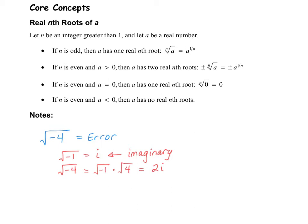However, if you have an odd number in the root — for example, the third root of negative 27 — negative 3 times negative 3 gives you positive 9, but positive 9 multiplied by another negative 3 does give us a negative number. So in this case, there is a solution, and that solution is negative 3. If you have an even index with a negative number on the inside, it's going to be no real solution. But if you have an odd index with a negative number, then you will have a solution, and that solution will be negative.